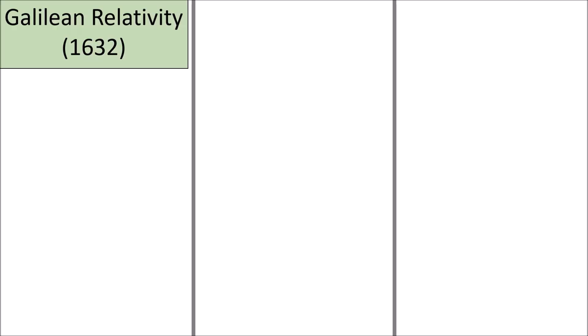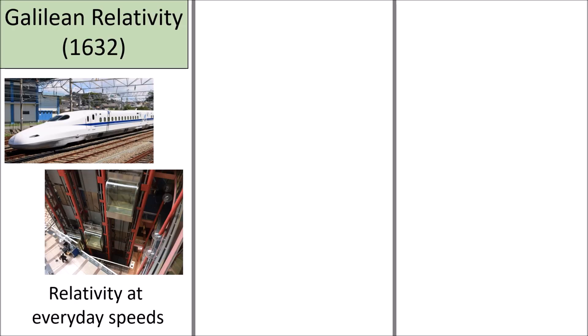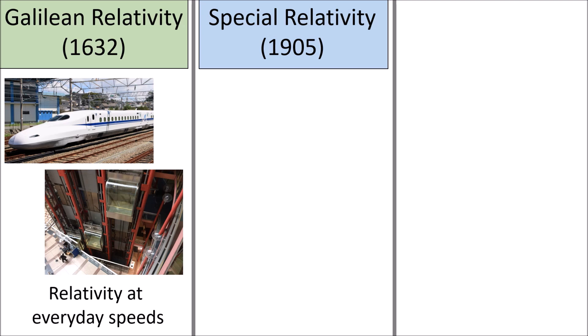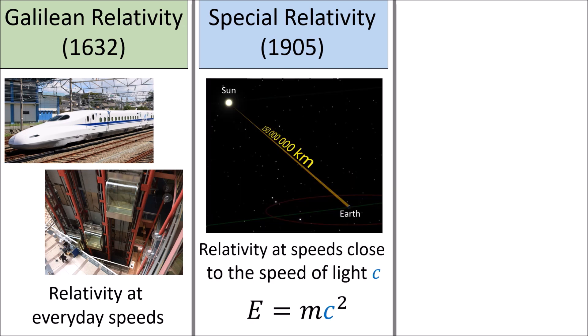There are really three scientific theories of relativity. There's Galilean relativity, which is the relativity we experience at everyday speeds, like inside trains or elevators. This is the type of relativity that was understood by Galileo, Newton, and other physicists before the 20th century. Then, in 1905, Albert Einstein built on the work of other physicists and came up with special relativity, which is the relativity we see when we travel close to the speed of light.